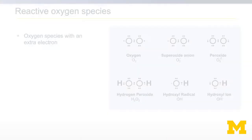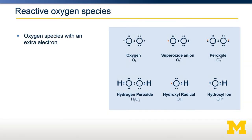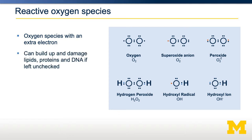There are several oxidant species, but the most important ones biologically are reactive oxygen species. This is when an oxygen molecule has an extra electron. For example, if you compare oxygen to the superoxide anion, there's one extra electron on the superoxide anion. This is unstable and that anion is going to want to donate that electron to another molecule. It could donate it to a lipid, a protein, or DNA, and in all those cases it will modify and could cause damage to that molecule and eventually to the cell.